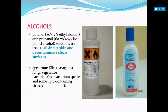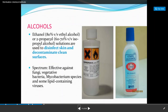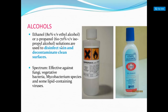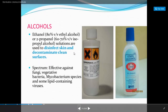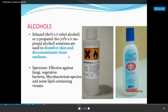The first chemical sterilizing agent is alcohol. Ethanol at 80% v/v and 2-propanol (isopropyl alcohol) at 60–70% v/v are used for disinfection of skin and to decontaminate clean surfaces. The spectrum includes: fungi, vegetative bacteria, mycobacterium species, and some lipid-containing viruses. Notably, the COVID-19 virus (SARS-CoV-2) has a lipid membrane, so 70% alcohol in sanitizers is effective against it.